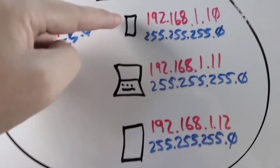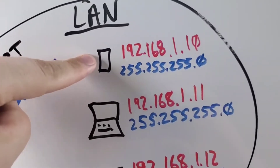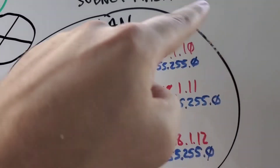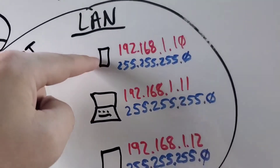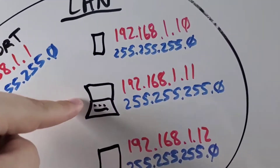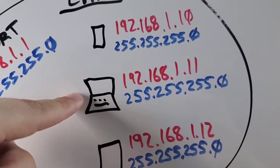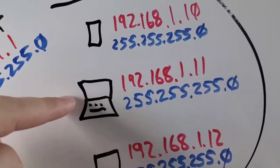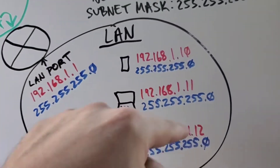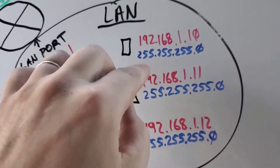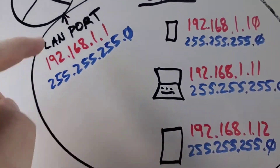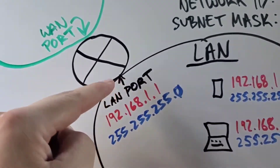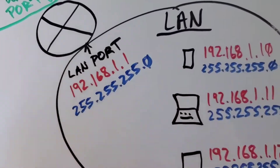For example, if this phone wants to get on the internet, it has to know that the internet is not on my LAN. You can't send traffic to 192.168.1.11 and expect to get Google, because everything on this LAN is all in the same network. The default gateway is the way that your devices get out of the network in order to get to the internet.